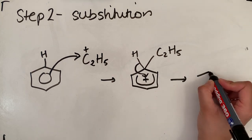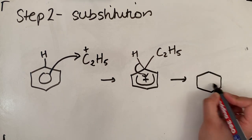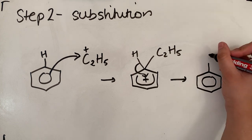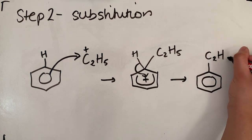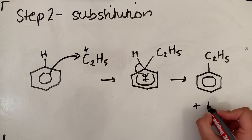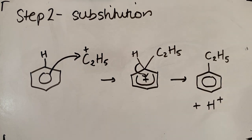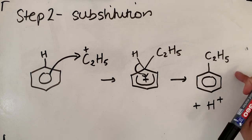In that process, we form our ethyl benzene. And we form an H+ as well. So we formed our ethyl benzene. We've got H+ over here. We now need to move to step three, where we regenerate our catalyst, our halogen carrier.